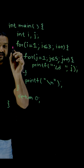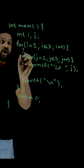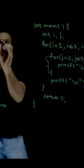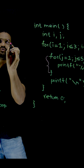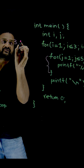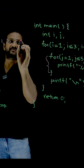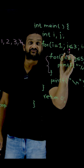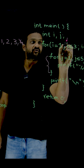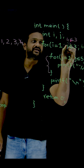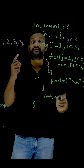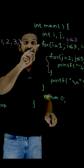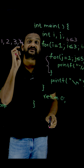In the entire program execution, this outer loop is going to iterate 1, 2, and 3 times. Whenever the value of i gets incremented to 4, we come out of this loop because the condition fails — 4 is not less than or equal to 3. So this loop is going to iterate 3 times.